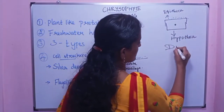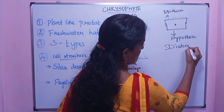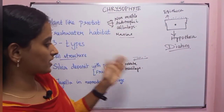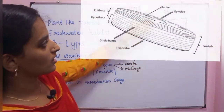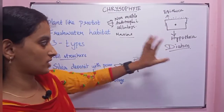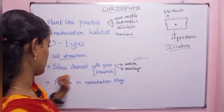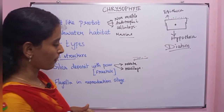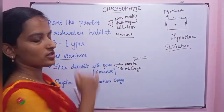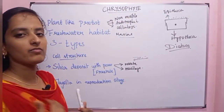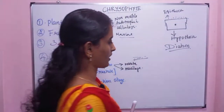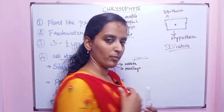Hypotheca is the lower part of the diatom cell structure. The cell has epitheca and hypotheca. Flagella are present only in the reproduction stage — that is why diatoms are considered non-motile. They undergo asexual reproduction.